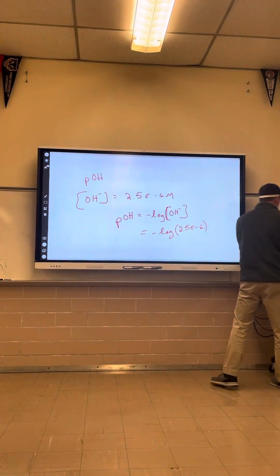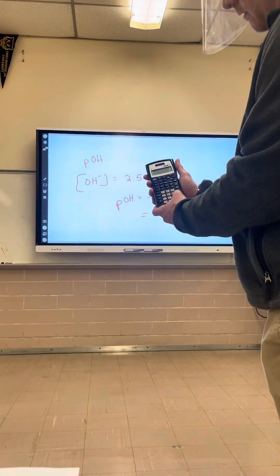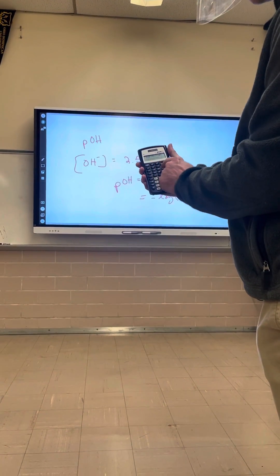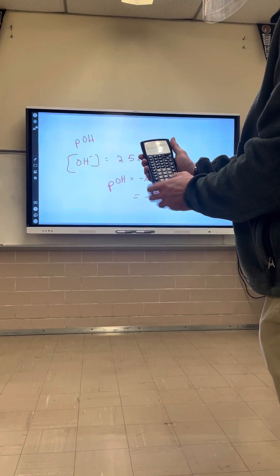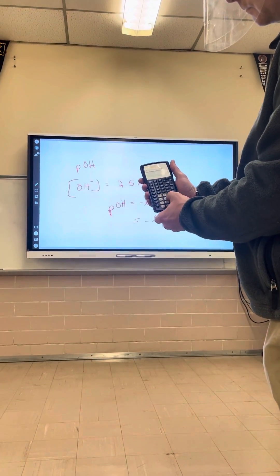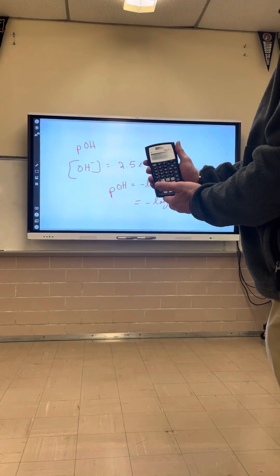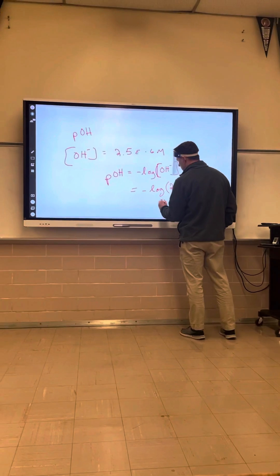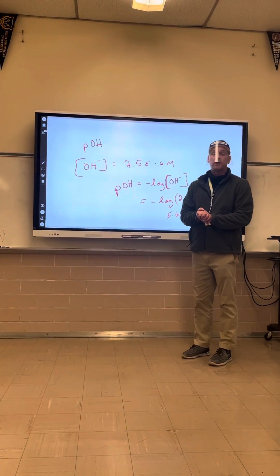Now I'm going to punch this one in a 30X2S. Negative log 2.5 E to the minus 6. I get 5.6 for my answer. Make sure you watch the supplemental videos if necessary.